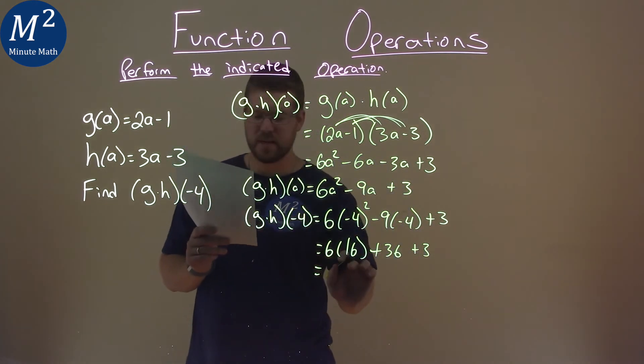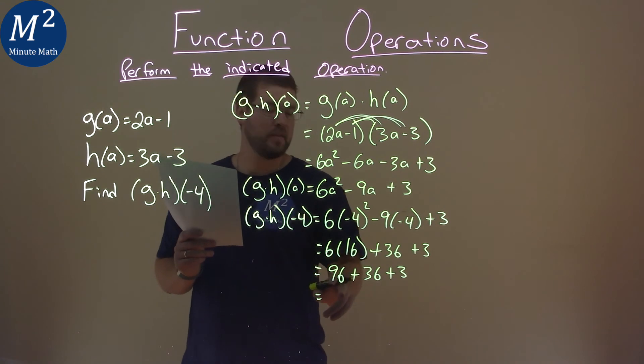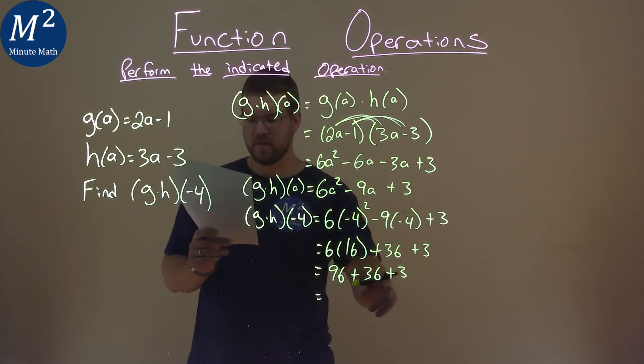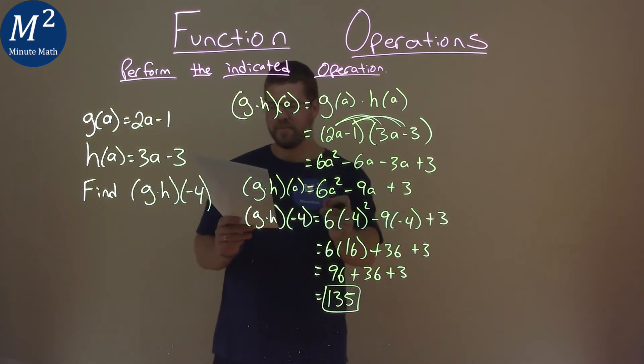Keep going. 6 times 16 is 96, plus 36 comes down, and plus 3. And so now, lastly, we add them up. 96 plus 36 plus 3 is 135. And so our final answer here is just 135.